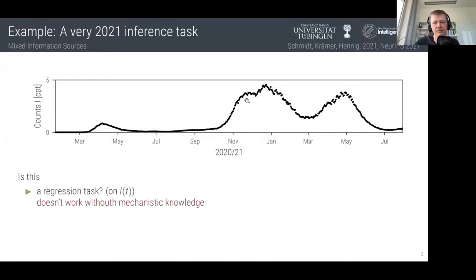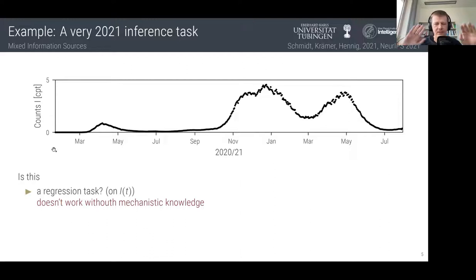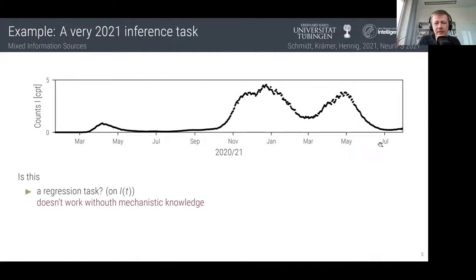Let me pick a simple example application: it's the COVID pandemic. What you see here is a time series of the number of infected people in Germany during the pandemic over the first one and a half years. I don't want this to be a political talk — I just want to use it as an example of the kind of problems you may encounter in the wild. The obvious question on everyone's mind in summer 2021 was: how does this curve continue into the future?